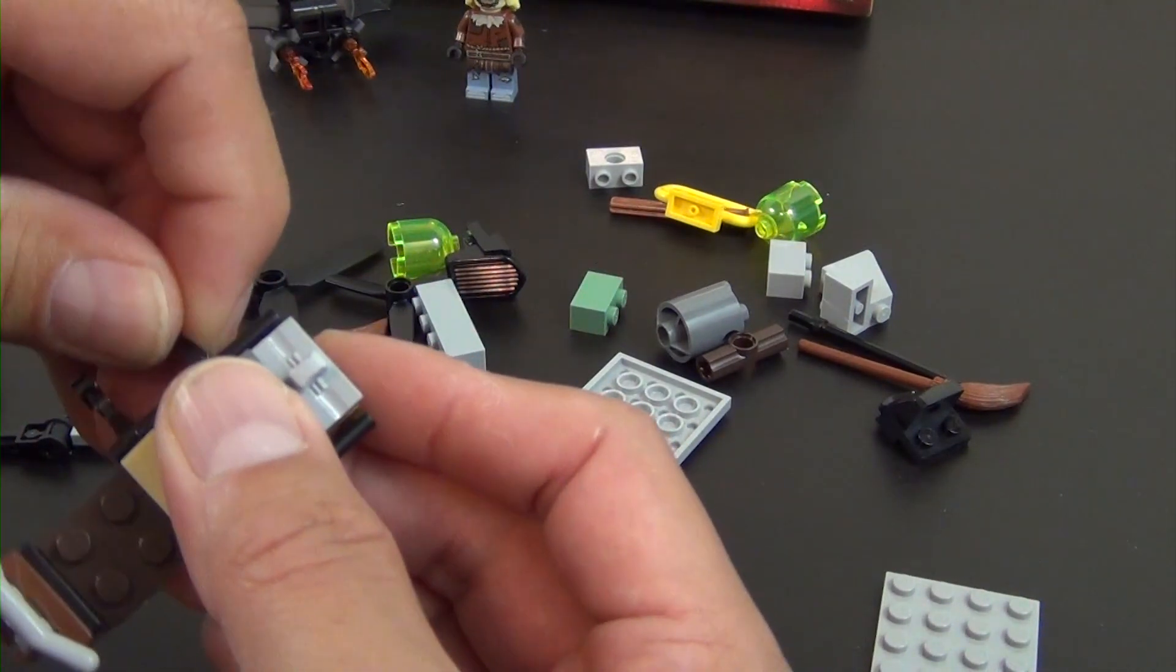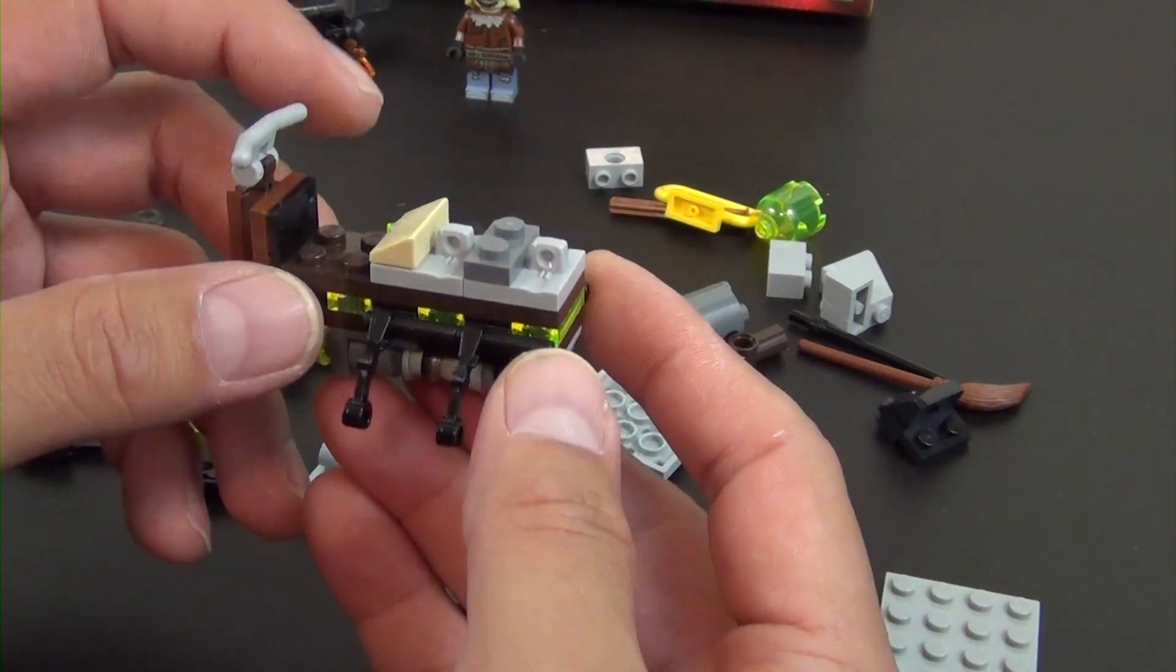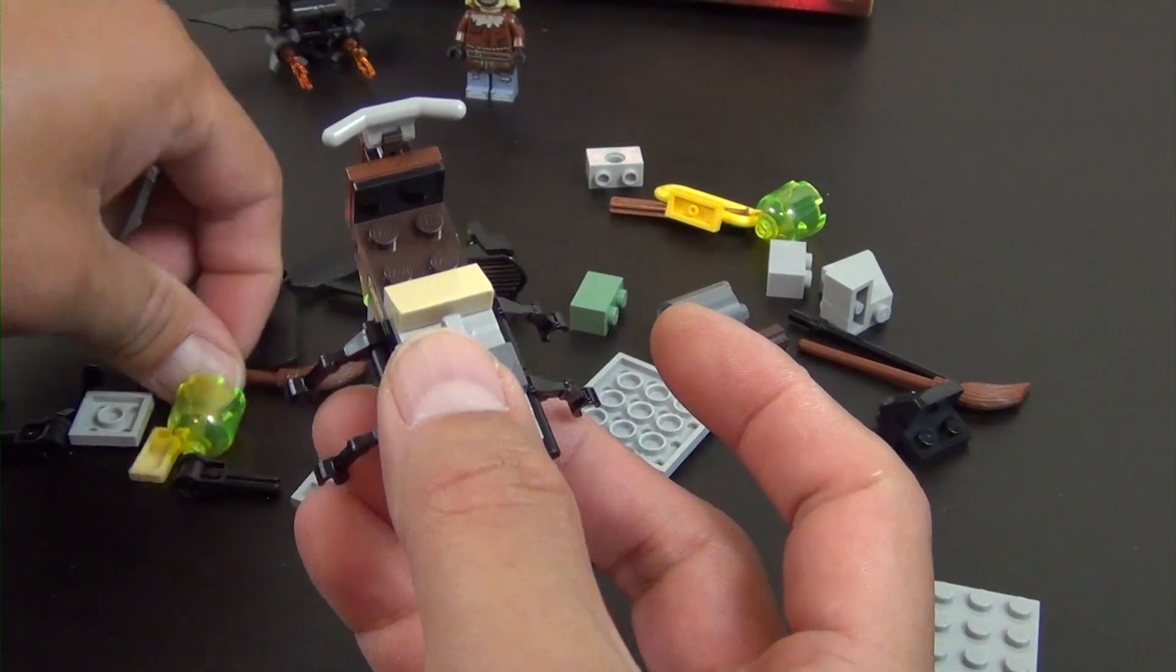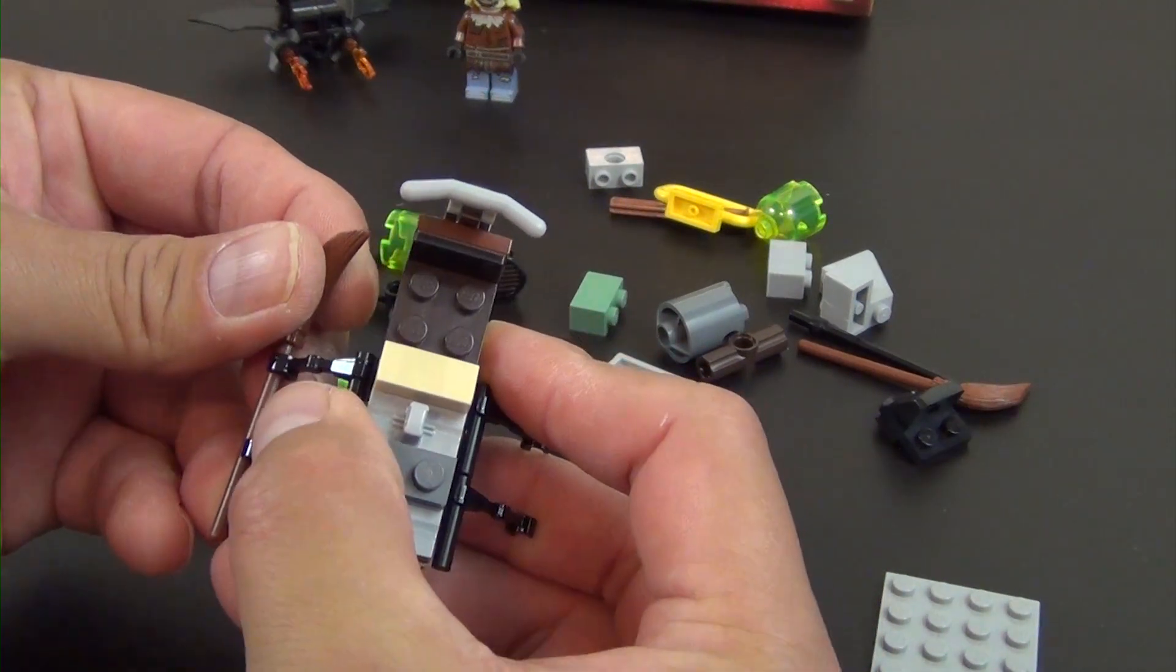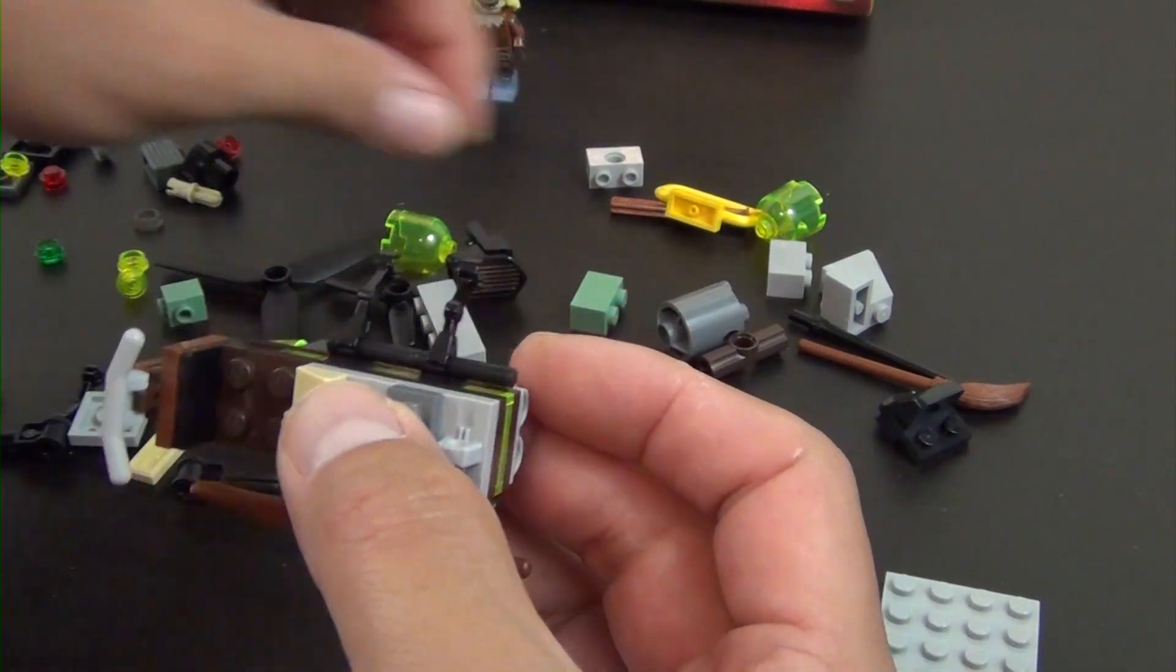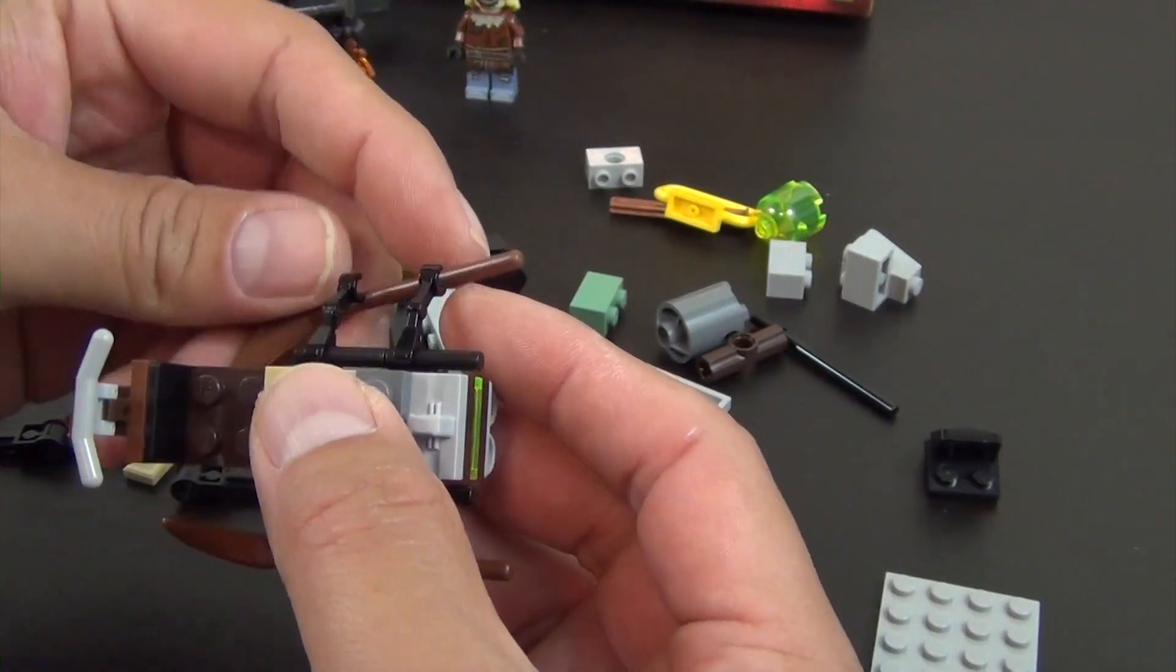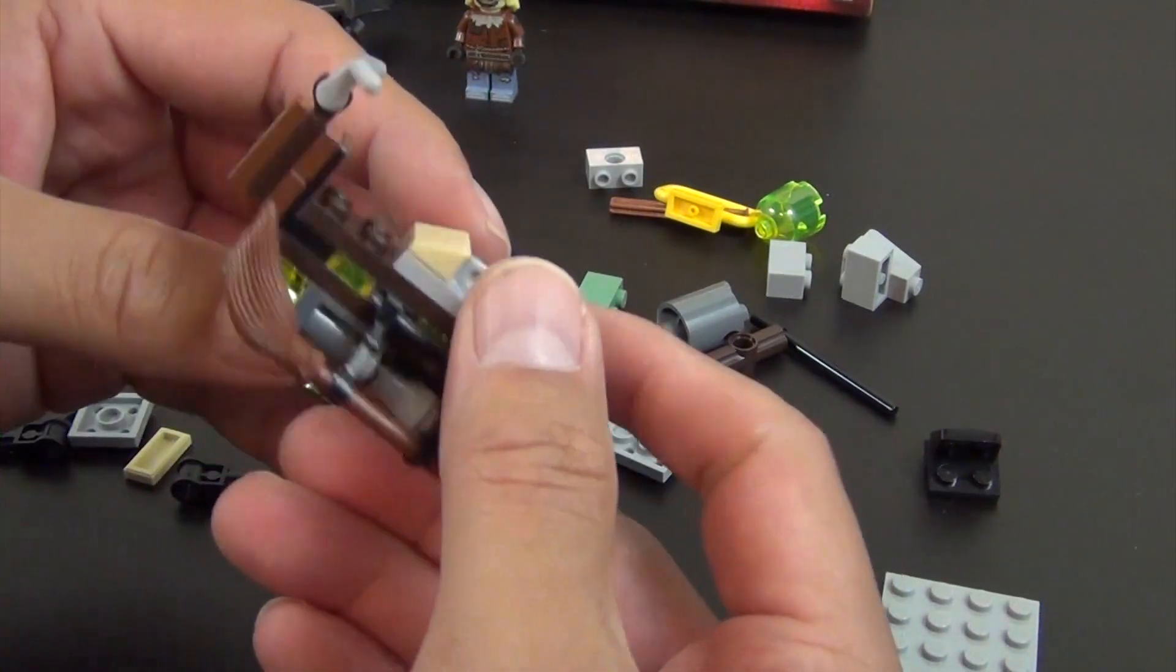Now we have these droid arms, go on both sides. And they go approximately where I'm putting them. They don't really show you the exact spot in the instructions, but that's about right. And then we're going to take this broom, clip it on here. This will create our skids that the helicopter will land on.